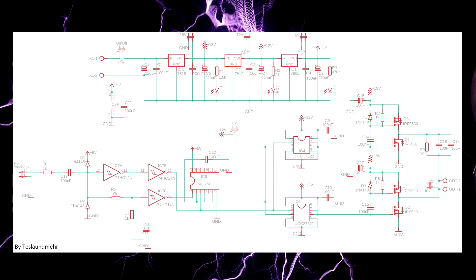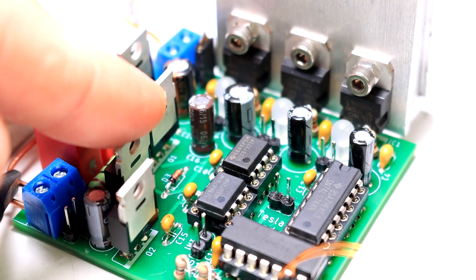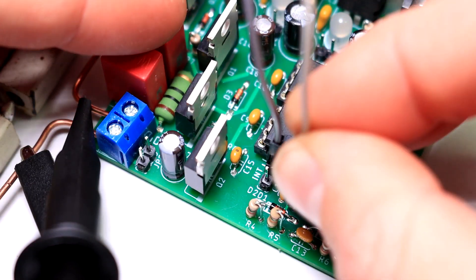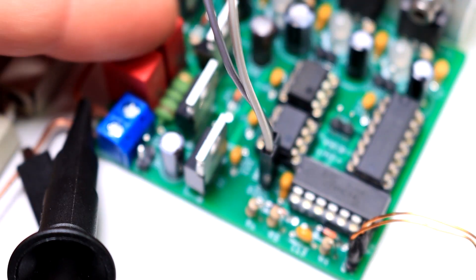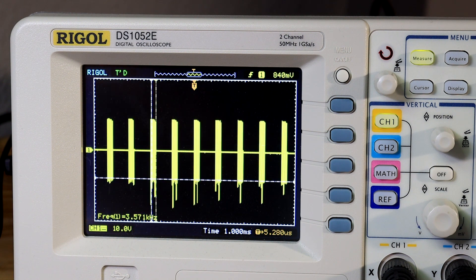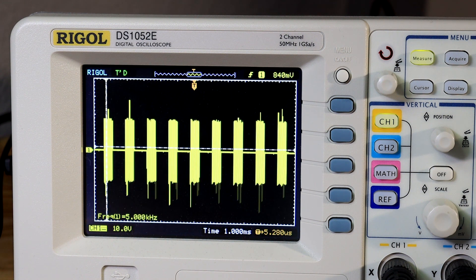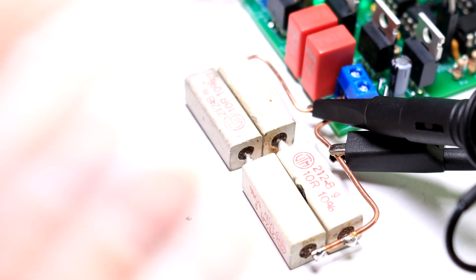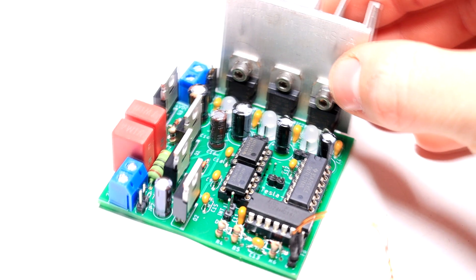Last but not least we want to test the circuit in the interrupt mode. For this we remove the bridging of the CV jumper and connect a signal from an interrupter to the INT jumper. The signal at the load resistor should now no longer be continuous but interrupted. In addition the load resistor no longer heats up significantly. Our driver is now ready for the next step.